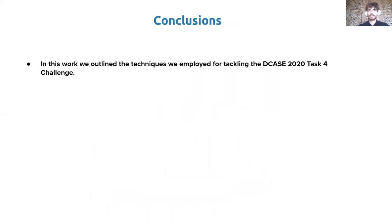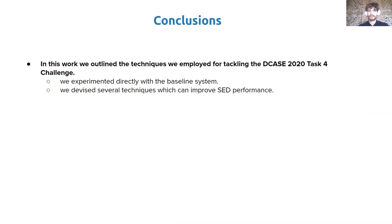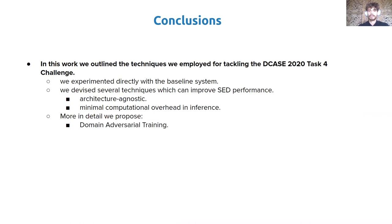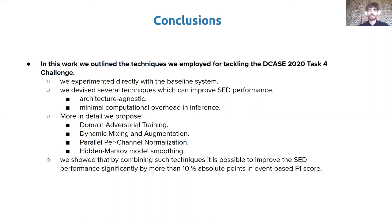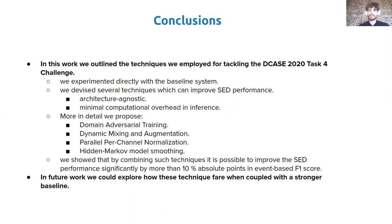To conclude, in this work we outlined the techniques employed for tackling the DCASE 2020 Task 4 challenge. We experimented with the baseline system and devised techniques which can improve sound event detection performance, which are architecture-agnostic and bring minimal computation overhead at inference time. In detail, we propose domain adversarial training for learning features invariant between synthetic and real-world data, dynamic mixing and augmentation to increase diversity of synthetic data, a novel parallel per-channel normalization layer to enhance different spectro-temporal characteristics in parallel, and Hidden Markov Model smoothing. We showed that by combining these techniques, it is possible to improve SED performance significantly — more than 10 absolute percentage points in event-based F1 score. In future work, we could explore how these techniques fare with a stronger baseline. Thank you for your attention.